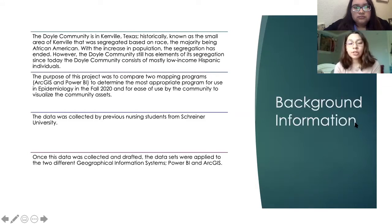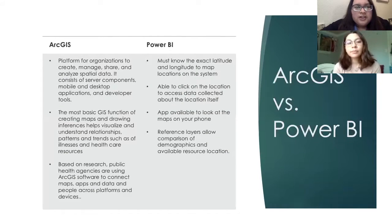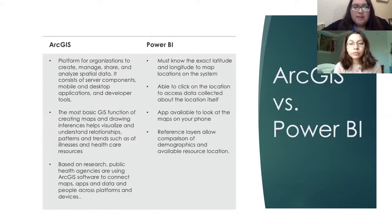This data was collected by previous nursing students from Shriner University. Once the data was collected, the datasets were applied to two different GIS systems — I used Power BI and Marta used ArcGIS. ArcGIS is a platform for organizations to create, manage, share, and analyze spatial data. It consists of server components, including mobile and desktop applications and developer tools. The most basic GIS function is to create maps and draw inferences, helping visualize relationships, patterns, and trends such as illnesses and healthcare resources. Public health agencies are using ArcGIS software to connect maps, apps, data, and people across platforms and devices.